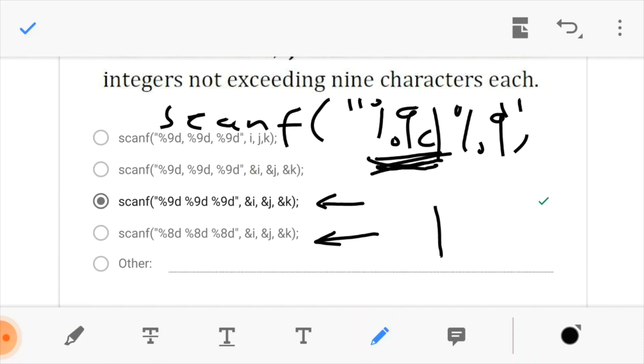This is the format specifier that we would use to specify the data we are taking from the user. The question said we are looking for decimal integers. Take note, we are looking for integers to be specific. So, this is the syntax you would use.